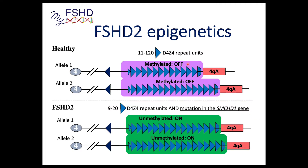In healthy individuals, the repeats are recognized and the off switch says turn me off, and the region becomes methylated. In FSHD2, the cell still recognizes that these are repeats that should be turned off, but what's broken is the cell's ability to turn the region off. The signal is there — it's just that the cell is not capable of turning this region off. So it's epigenetically on, and you express the DUX4 gene in your skeletal muscle, leading to FSHD2.